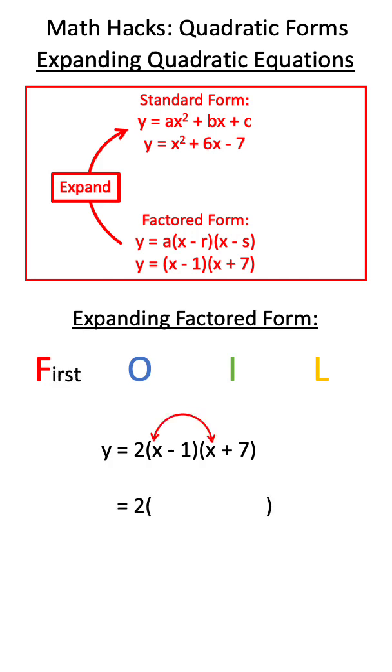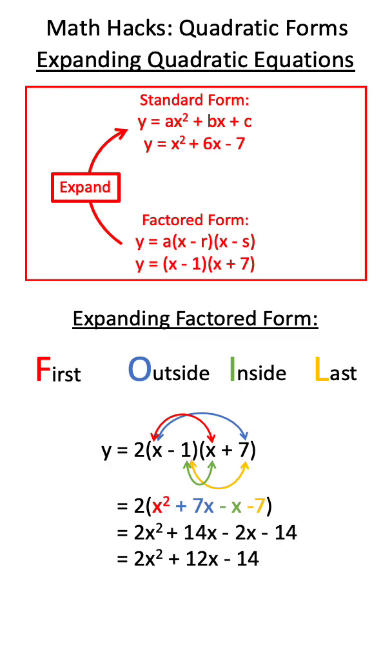So to do this, we use FOIL to multiply the first terms together, the outside terms together, the inside terms together, and the last terms together. Next, we multiply all of these terms by the A term, and we collect them to create standard form.